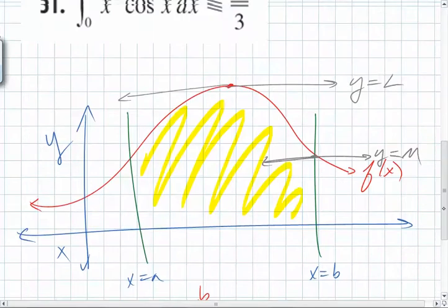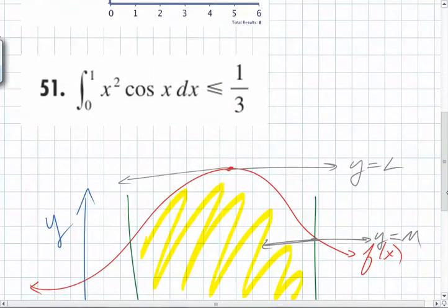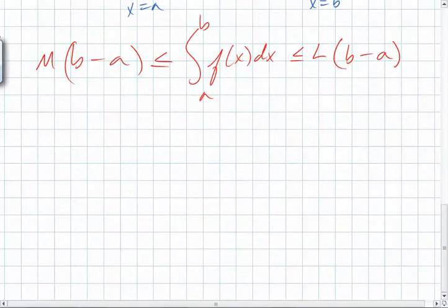So getting back to this question, it's asking you, prove that it's less than a third. You have to come up with the max and mins. And actually, the max and mins, usually you'd think you'd have to use the first derivative test, find critical values. But here's the thing. What is cosine x always less than or equal to? One.